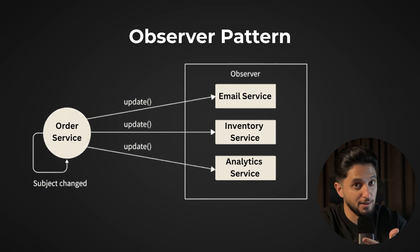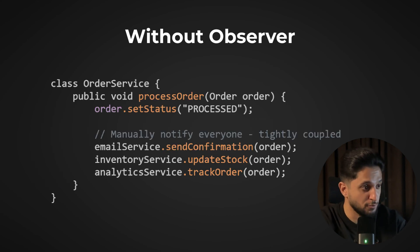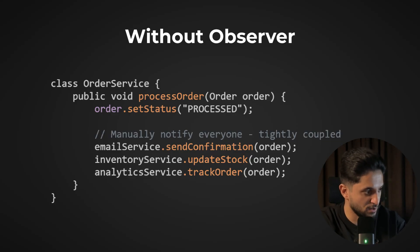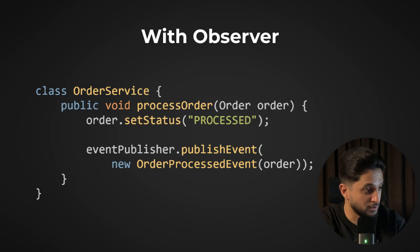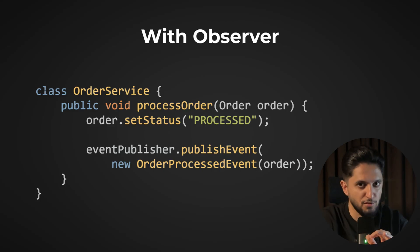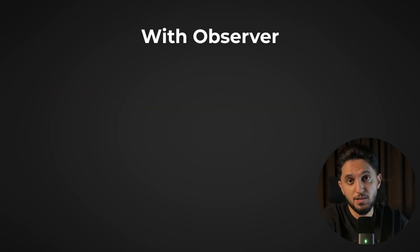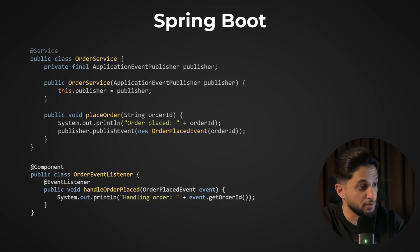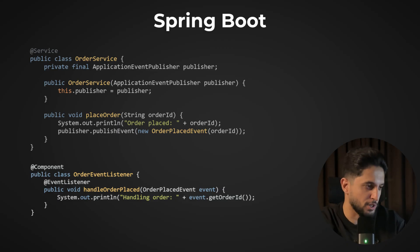Without the observer pattern, you'd have to manually update every dependent object — calling email service, inventory service, and analytics service directly. With the observer pattern, the order service doesn't know who needs to be notified; it just publishes an event using eventPublisher.publishEvent. The observers — email service, inventory, and analytics — subscribe to this object. In Spring Boot you use the ApplicationEventPublisher to publish events and @EventListener to handle them, and Spring automatically finds all annotated handler methods.